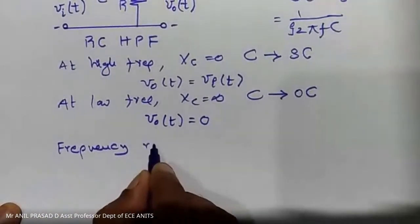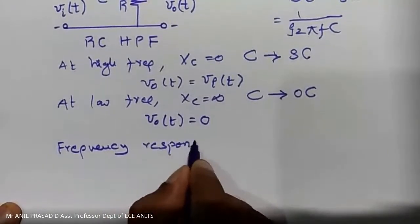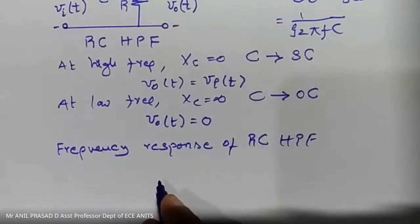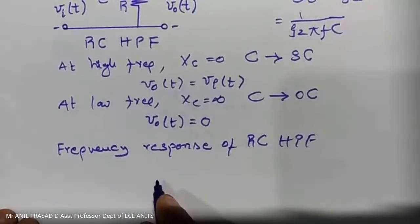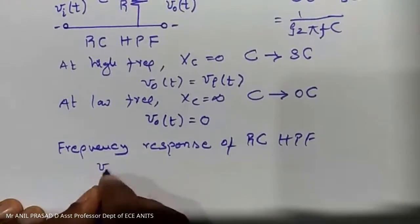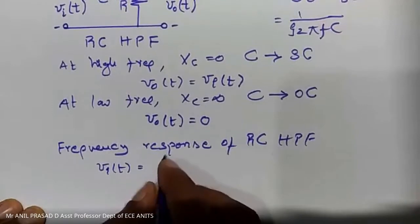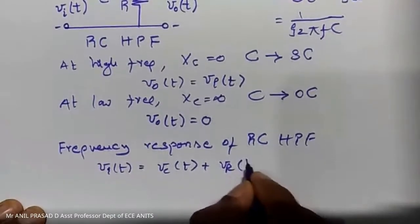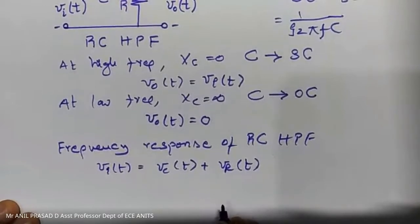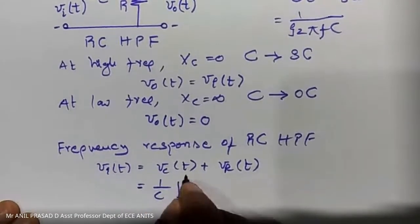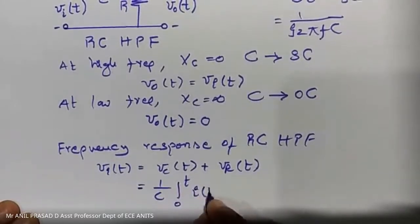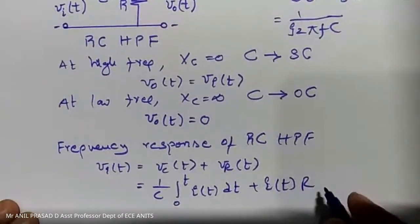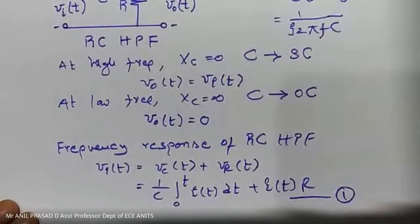Frequency response of the RC high pass filter circuit. When the input is a sinusoidal input, applying KVL: VI(t) = VC(t) + VR(t). The voltage across the capacitor is (1/C)∫I(t)dt, and the voltage across the resistor is I(t)·R. Let this be equation 1. V₀(t) is the output voltage taken across the resistor, so V₀(t) = I(t)·R. Let this be equation 2.